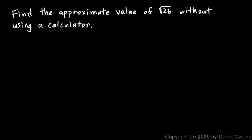Find the approximate value of the square root of 26 without using a calculator. We can't find the exact value because it's an irrational number — the decimal places go on forever — but we can find an approximate value. We know it'll be a little bigger than 5 because the square root of 25 is 5, but is it 5.2, 5.1, or 5.01? We could do trial and error, or try to use the square root algorithm, but that's lengthy, cumbersome, and tedious.